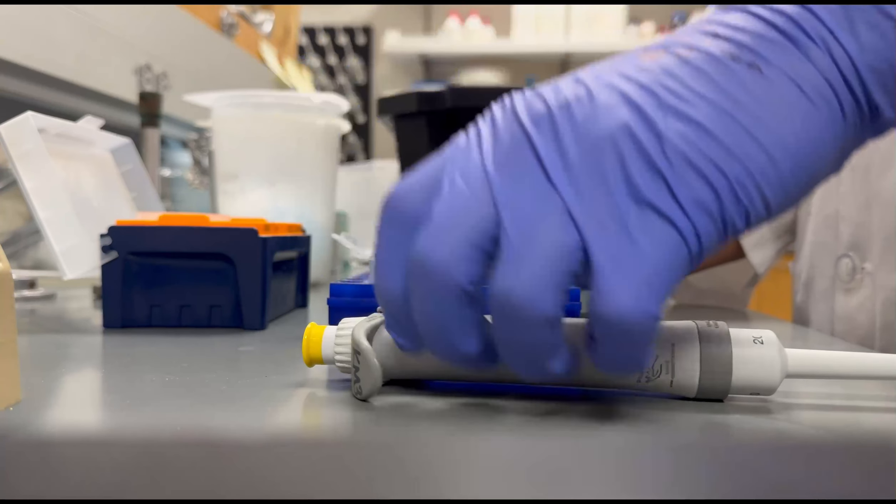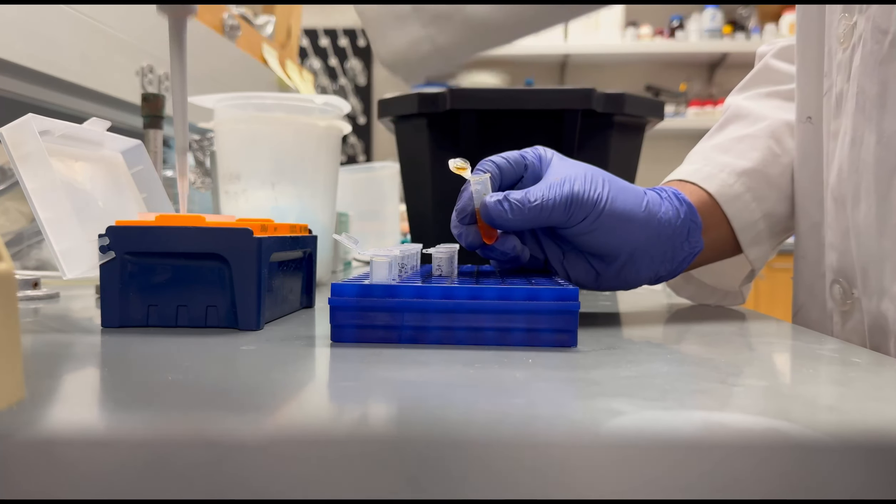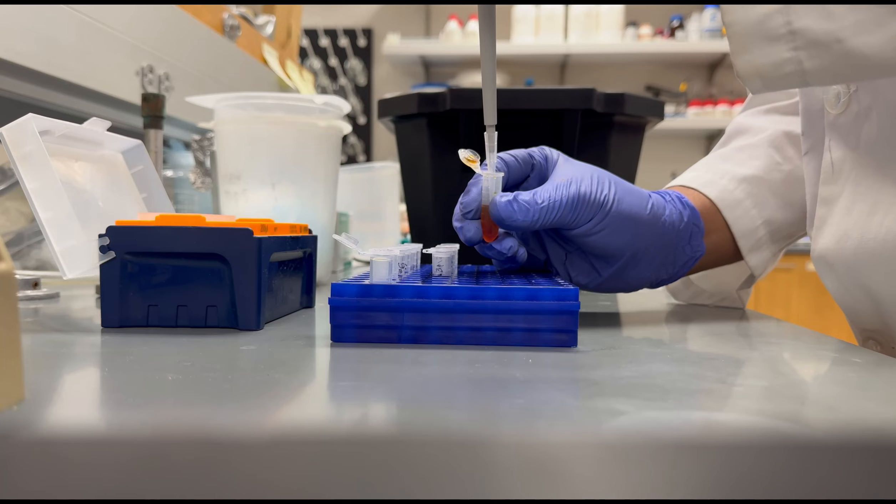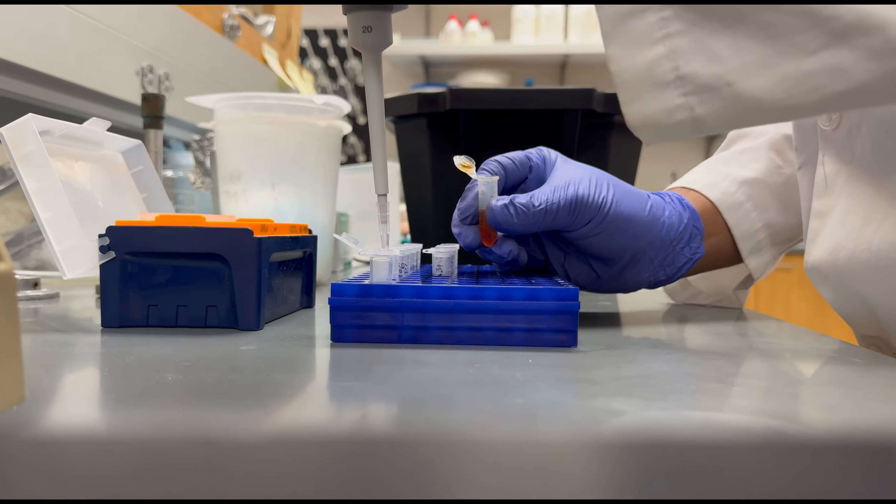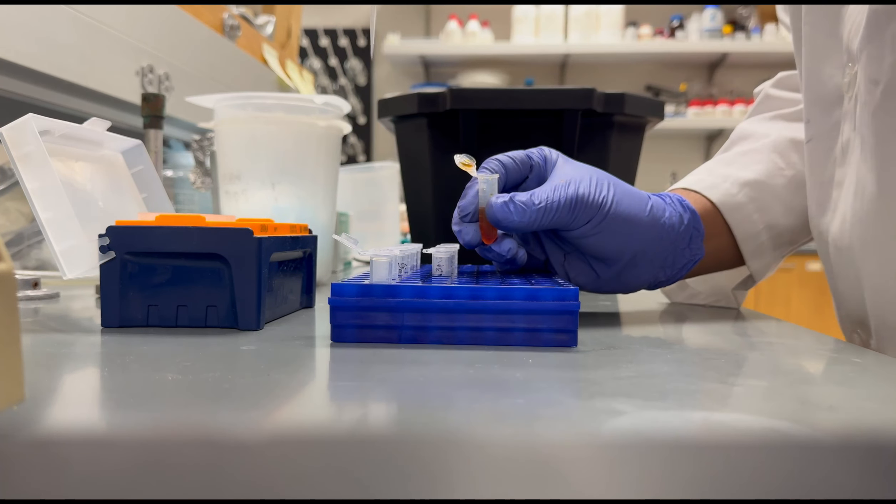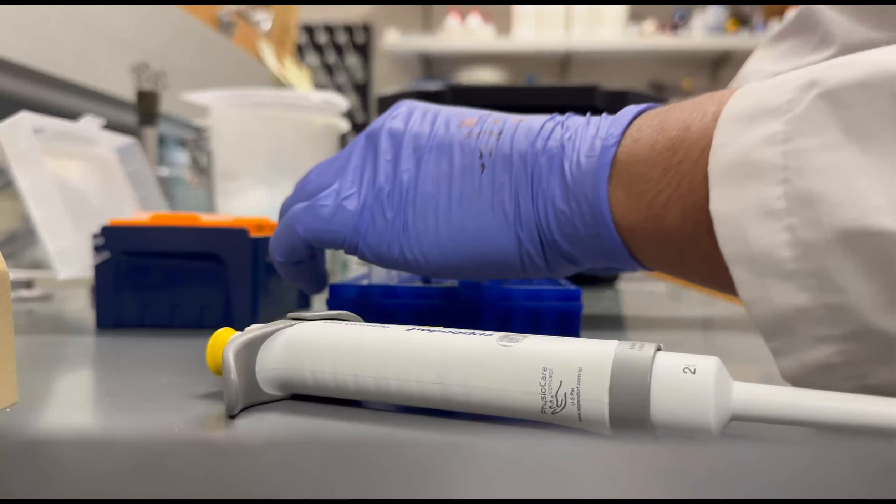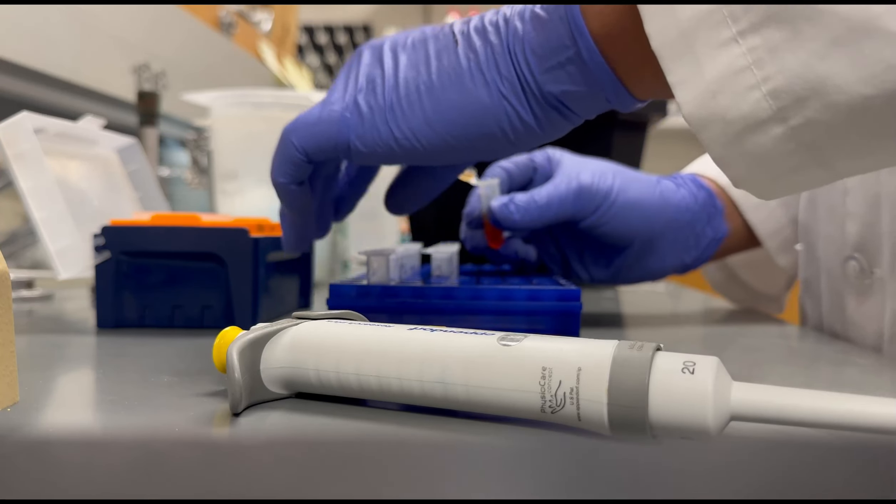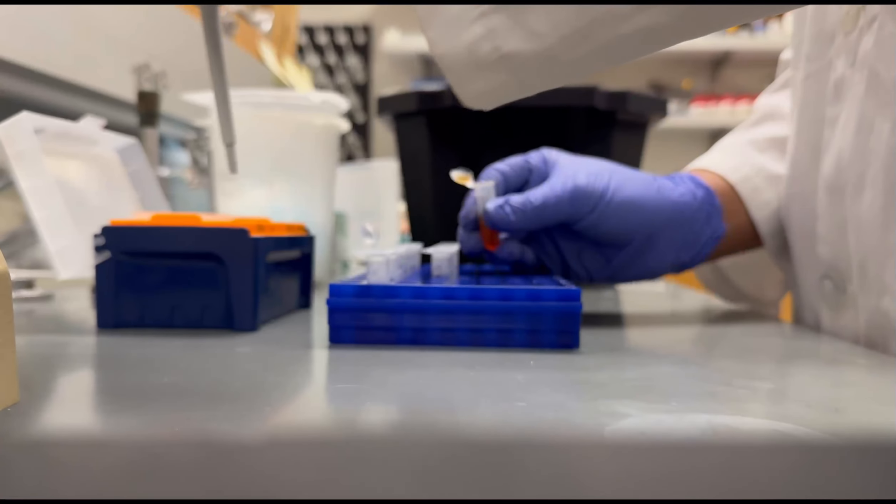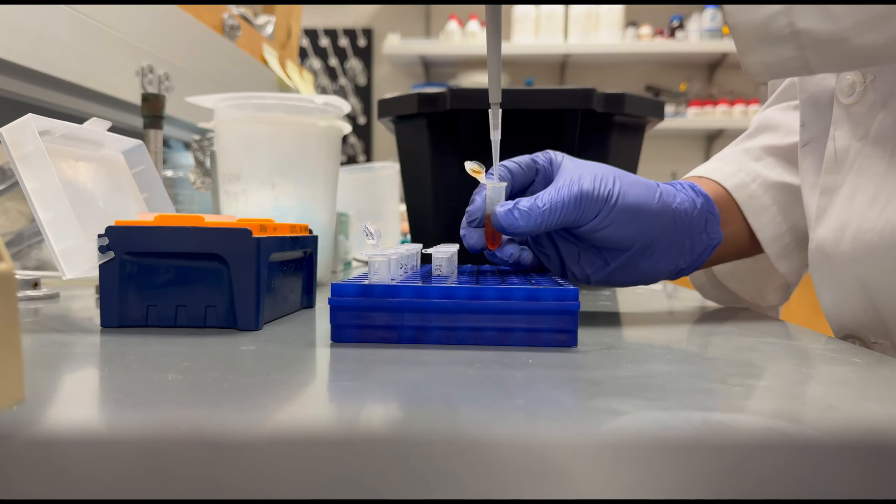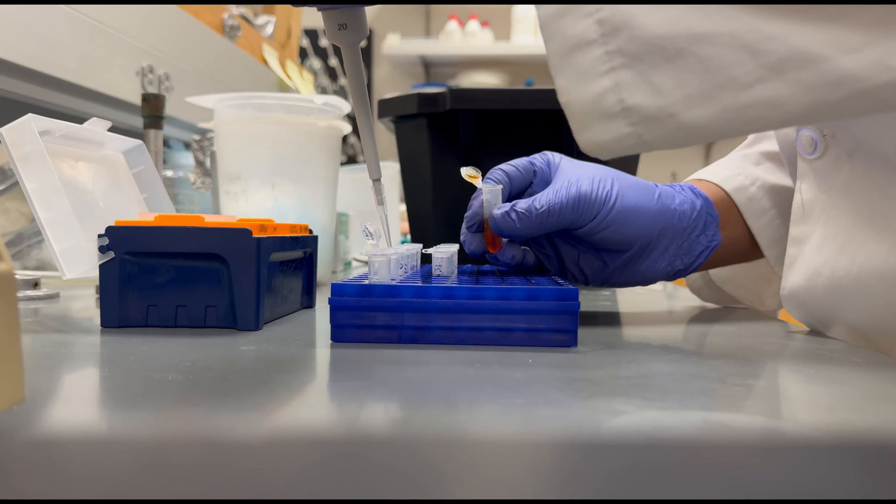The samples typically included are a crude sample after sonicating for purification, a clarified lysate sample taken after centrifugation, a sample of the flow through before running through the affinity column in the HPLC, and finally a few samples taken during the purification process using the size exclusion column.